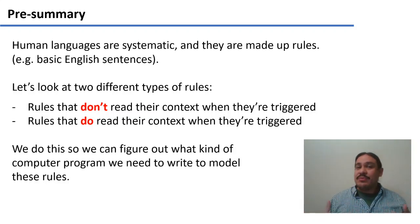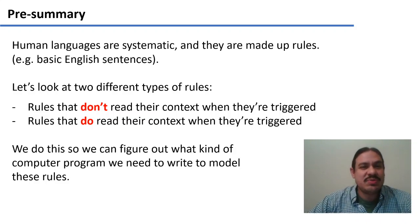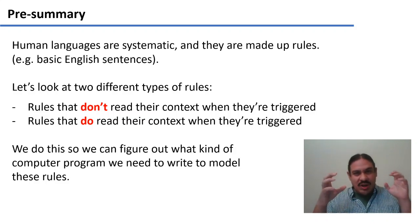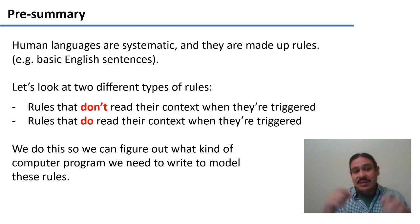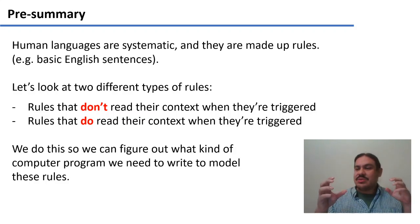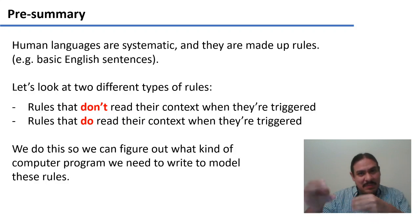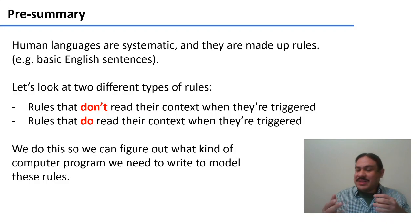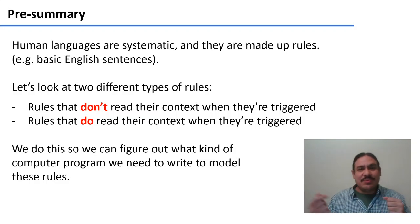Languages are made up of rules. We're going to look at two different types: some rules that don't need to look at their context in order to be triggered or run, and some rules that do need to read their context so that they know how to run. We need to do this because we need to figure out what kind of computer program we need — maybe something that can look ahead or behind.